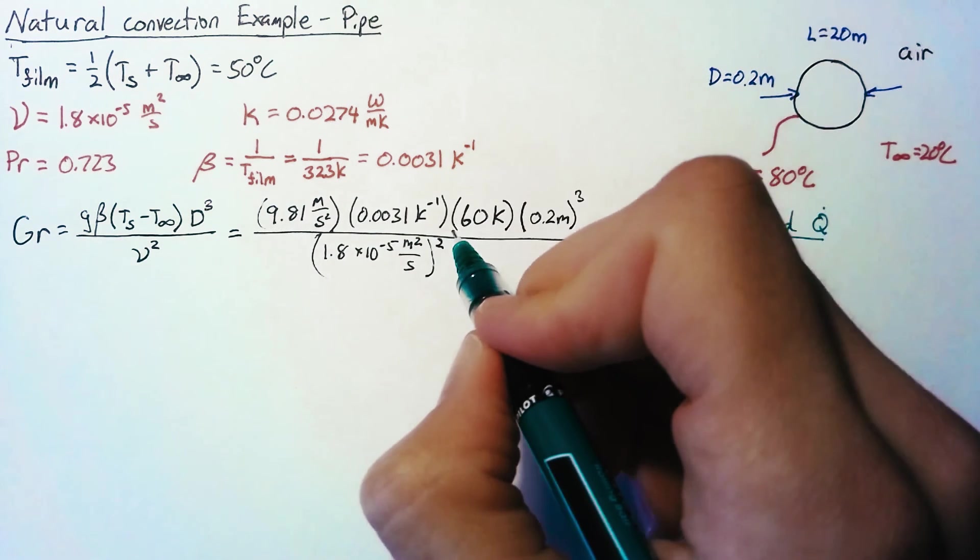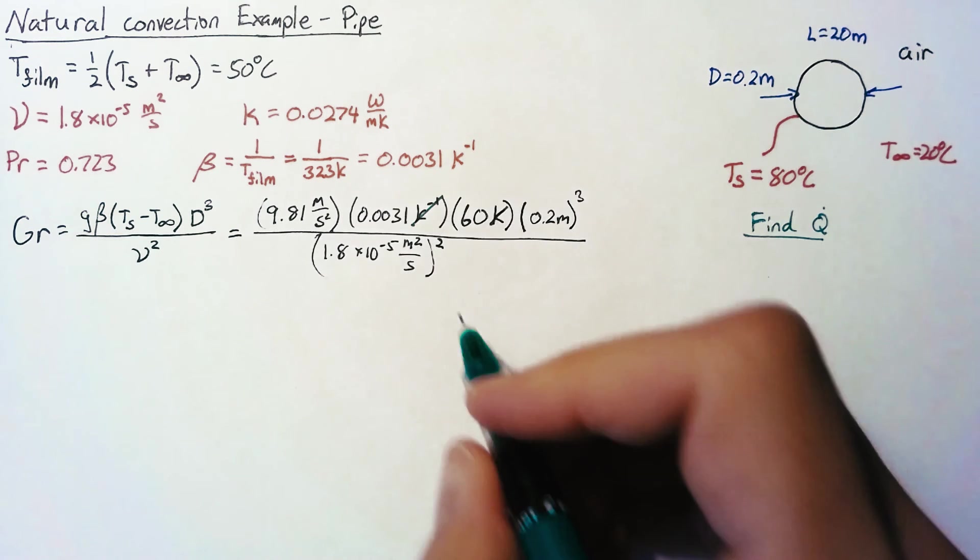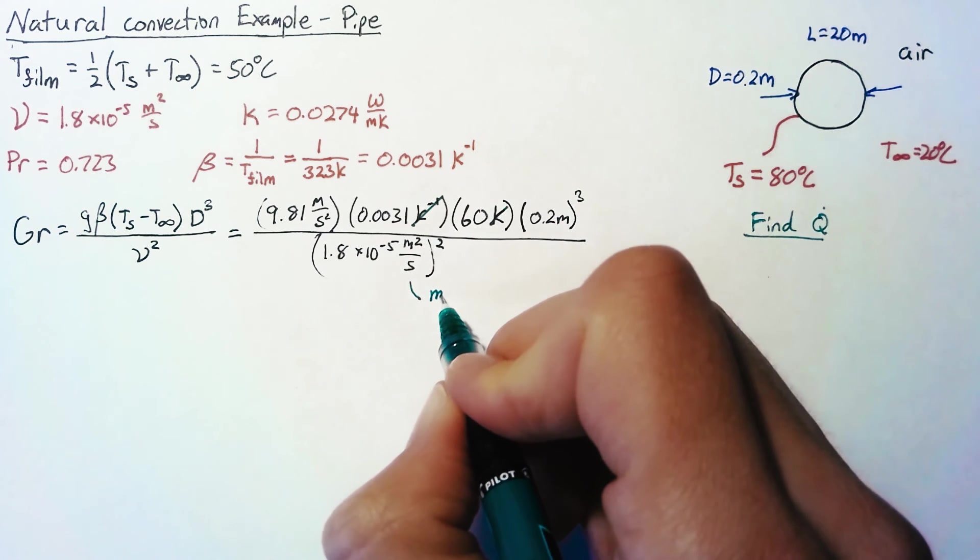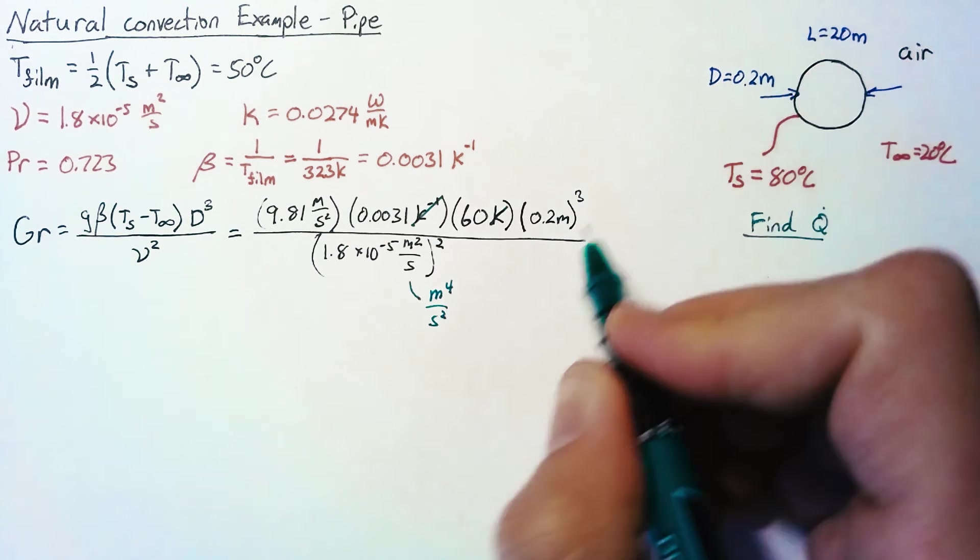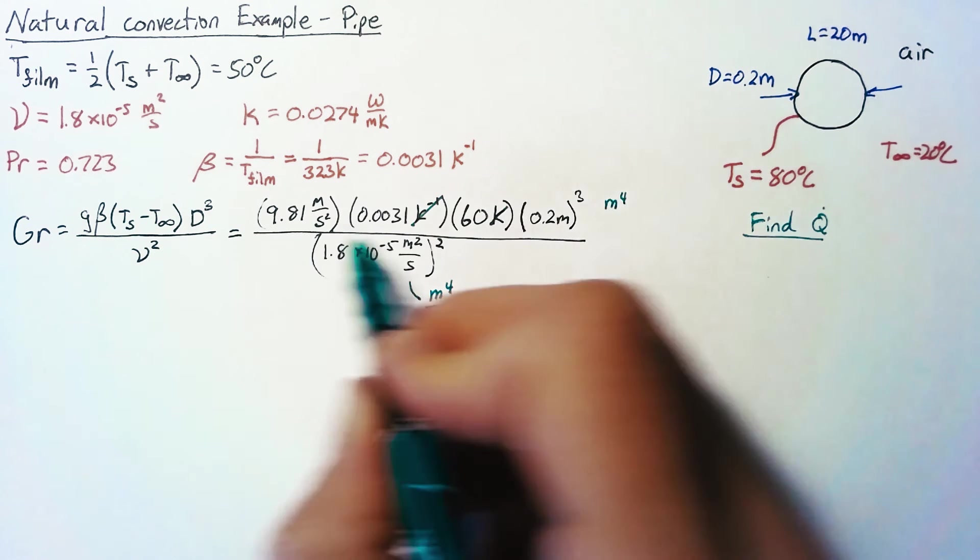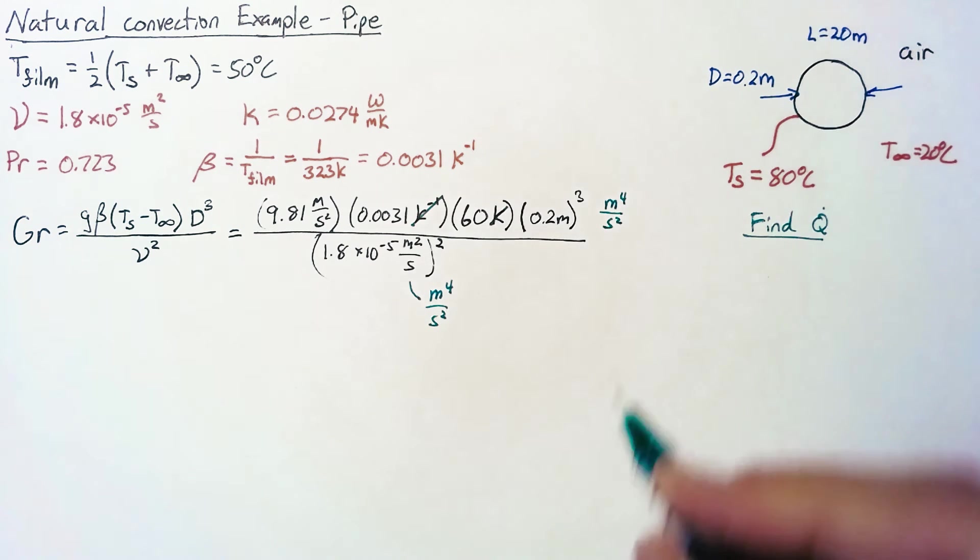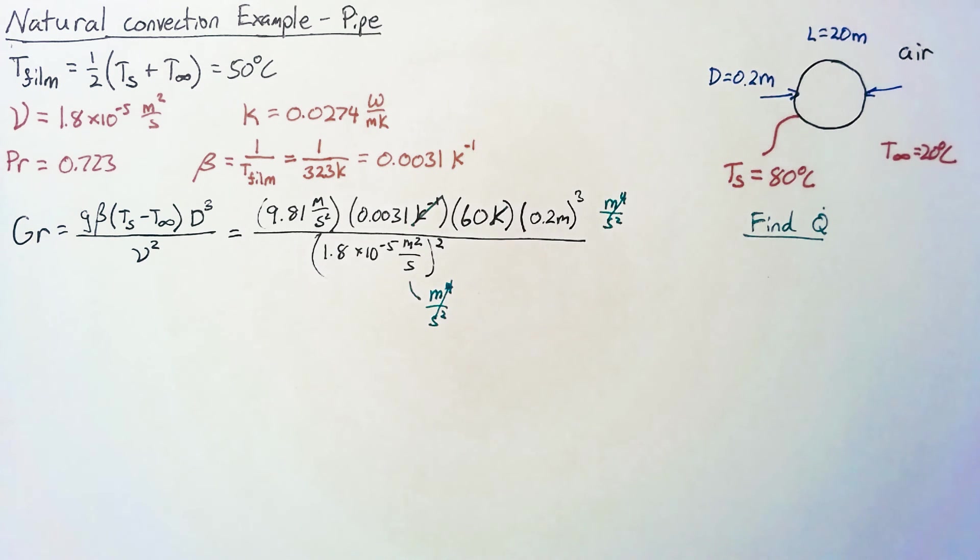So really quick, just looking at these units, our Kelvins will cancel out. We're going to end up with meters to the fourth per second squared on the bottom. We're going to end up with 1, 2, 3, 4 meters and 2 seconds on the top. And so these guys will also cancel out. As expected, our Grashof number is perfectly unitless.